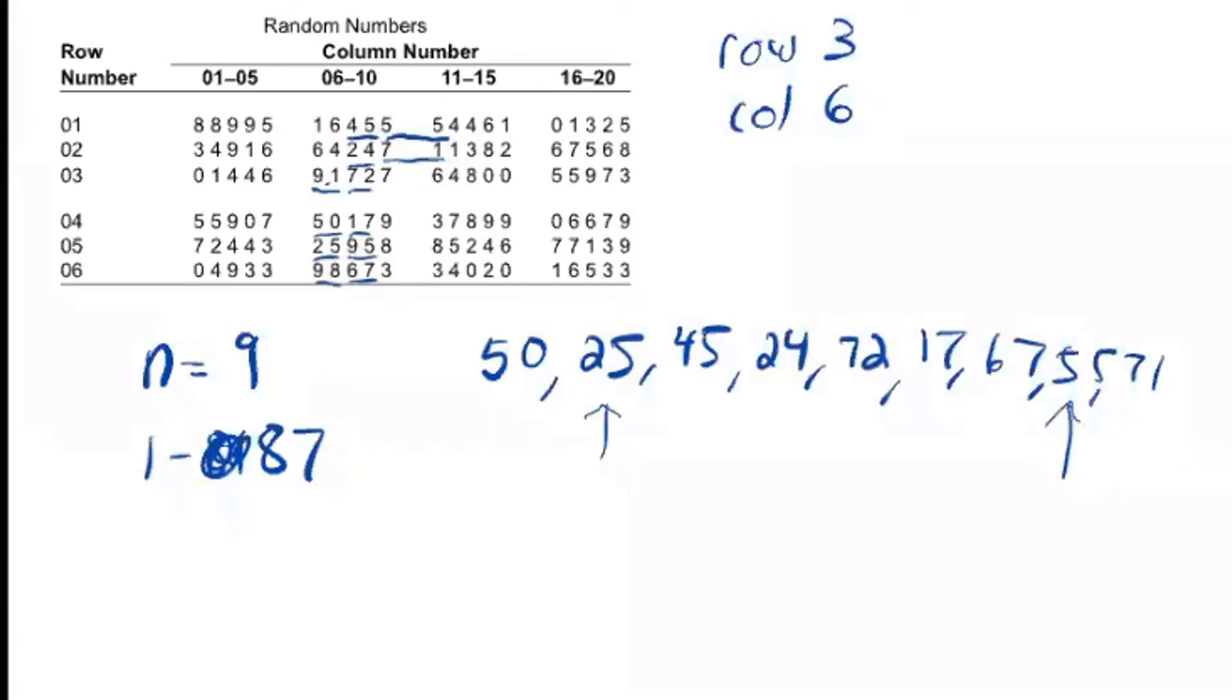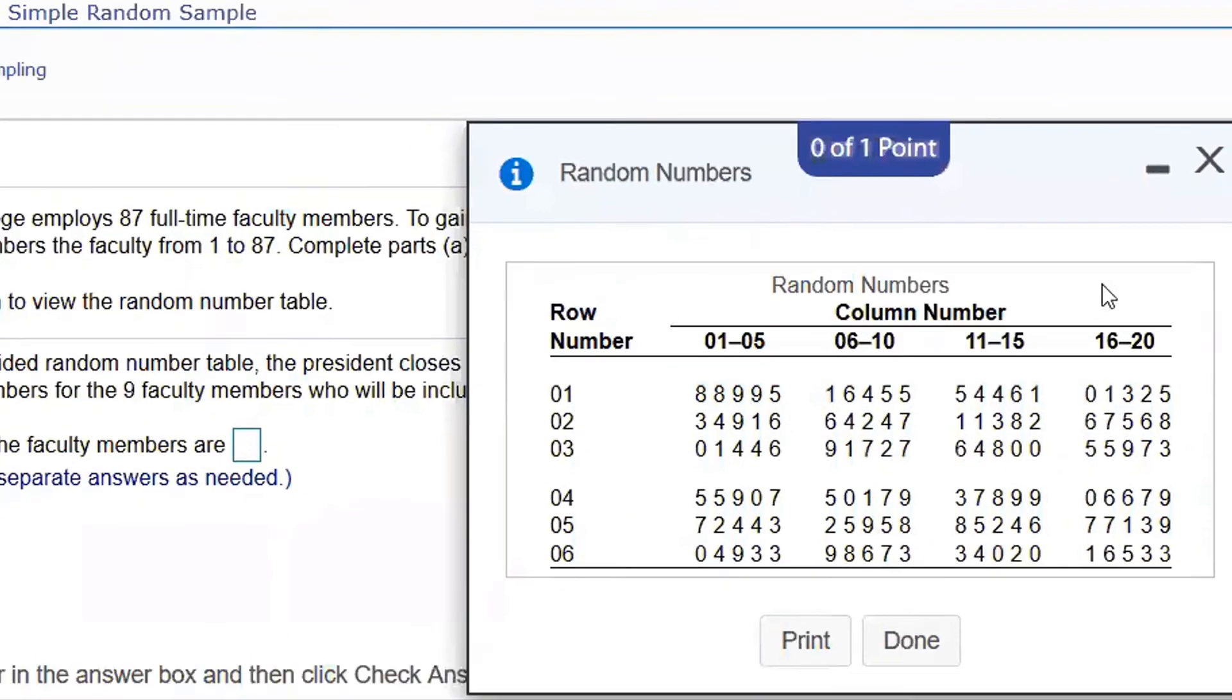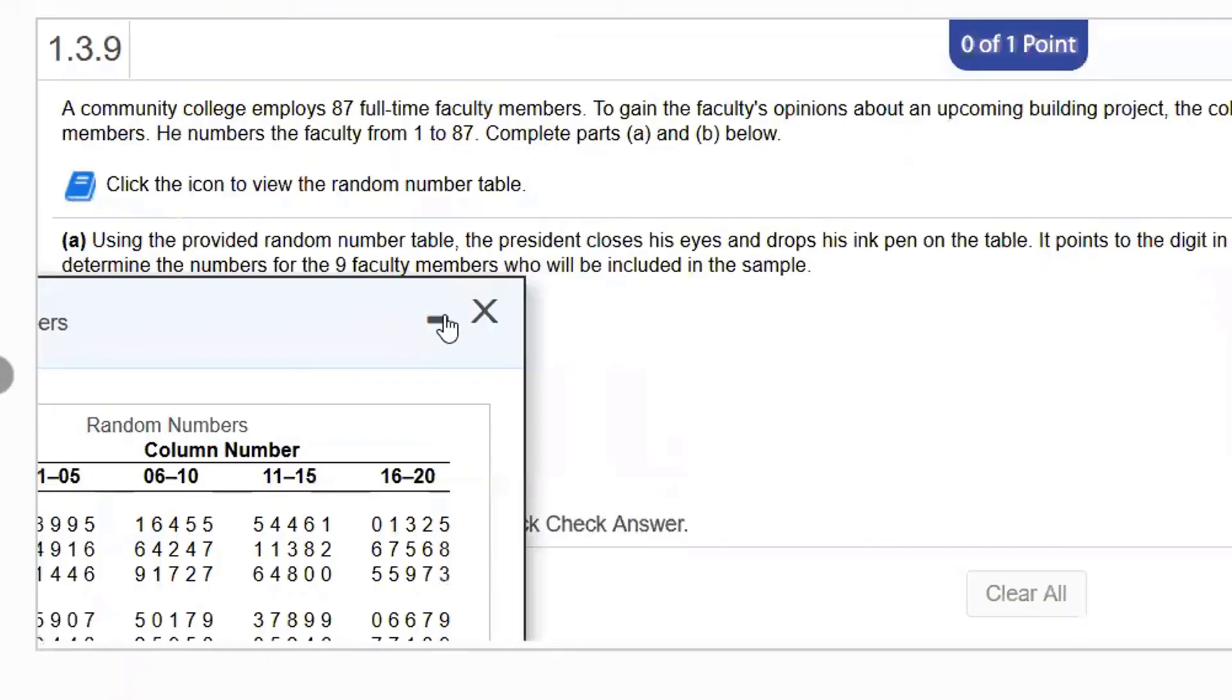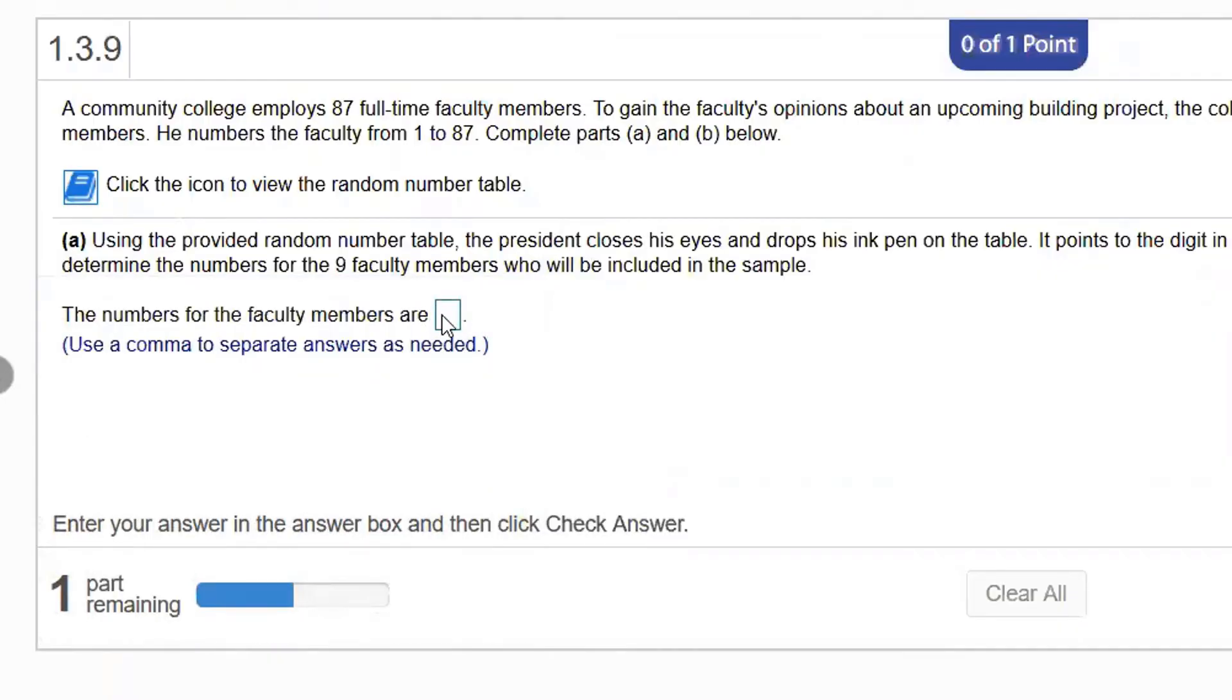Now, we use computers to generate the random numbers for us, which is definitely much better. So just so that I can move to the next part of the problem, I'm going to type those in, like I mentioned, with commas.